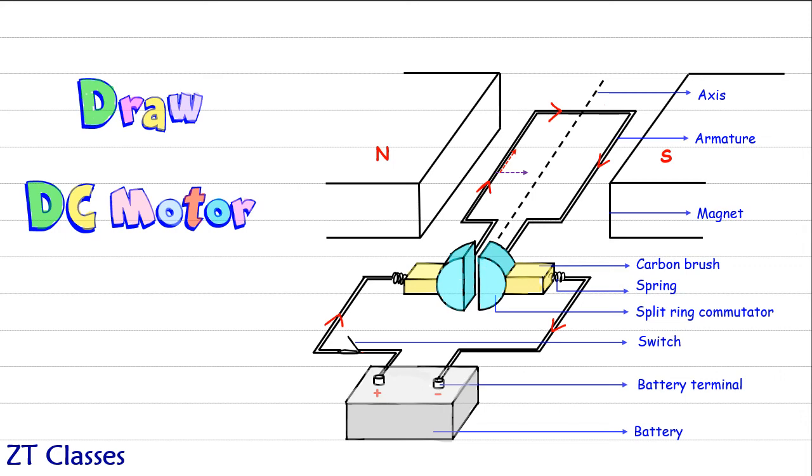In this case, the direction of force is coming downward. Throughout this left side of the armature, the direction of force is downward. Logically, the direction of force on the right side of the armature will be upward. This force will create a torque and the armature will rotate anti-clockwise. This is the complete diagram of a DC motor.